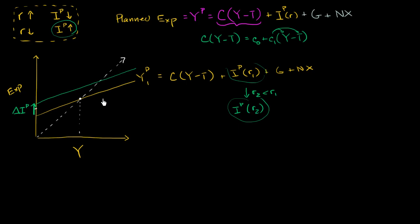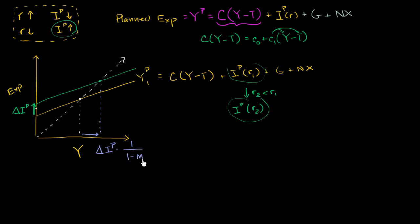Because real interest rates went down, we get to a new equilibrium point — a higher level of GDP or income. We know from previous videos that this distance along the income axis is the multiplier times the amount things got bumped up. So the change in equilibrium GDP equals the change in planned investment times the multiplier, which is 1 over the marginal propensity to save, or 1 over 1 minus the marginal propensity to consume — that's our C1.